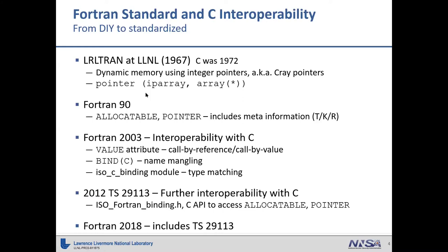Fortran 90 introduced allocatable and pointer attributes to deal with dynamic memory. But instead of just using a raw address, they used a metadata dope vector that has type, kind, rank, and shape information. So you couldn't pass those directly to C. If your function did not have an interface, it would pass the address of the variable instead of the address of the pointer. You could still use your memory from C, but you could not allocate memory in C.